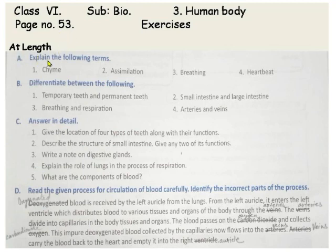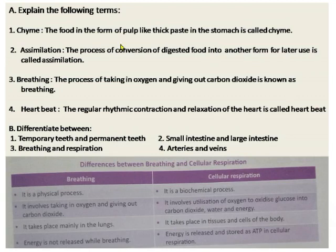Section A: explain the following terms. First one is chyme. Let us see what is chyme. The food in the form of pulp-like thick paste in the stomach is called chyme.